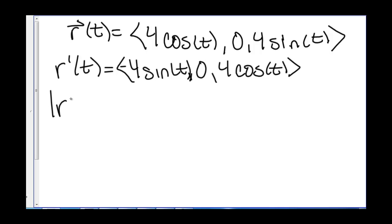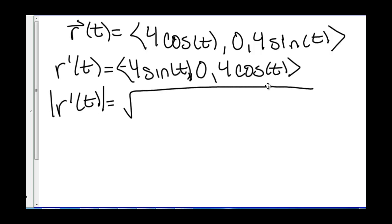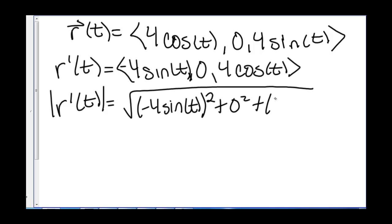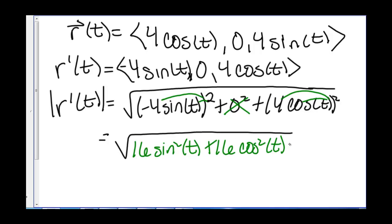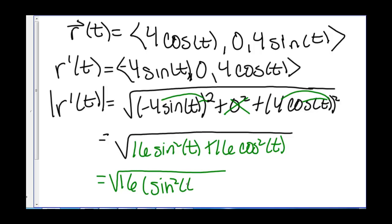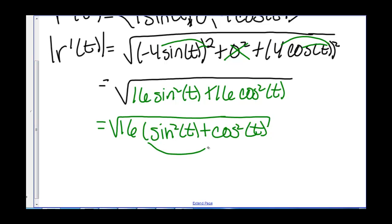Then we need to find the magnitude of r′(t). That's the square root of (−4sin t)² + 0² + (4cos t)². Distributing the squared terms gives √(16sin²t + 0 + 16cos²t). We can pull out the 16, giving √(16(sin²t + cos²t)). Since sin²t + cos²t = 1, we get √16 = 4.